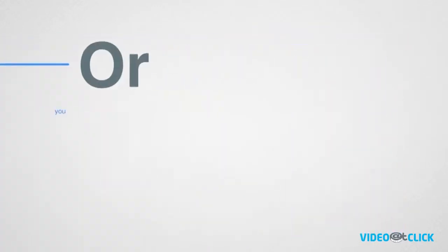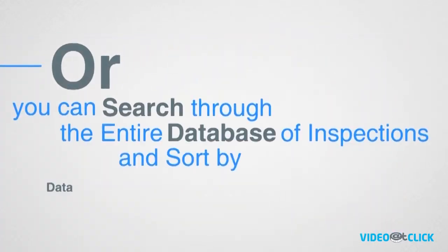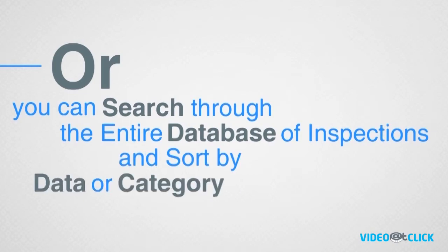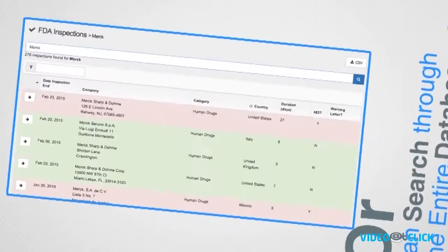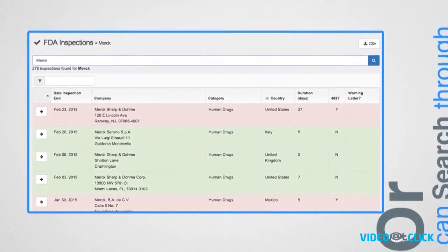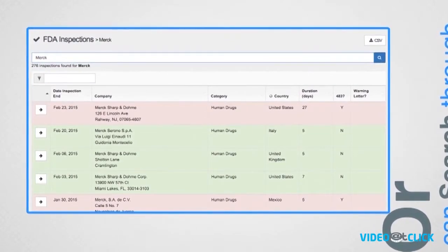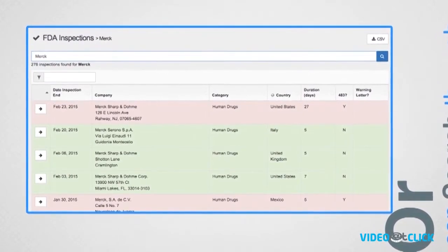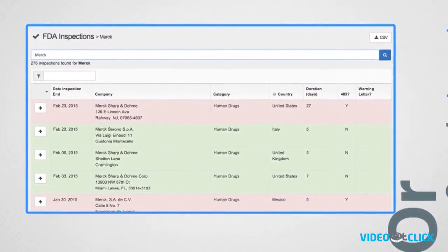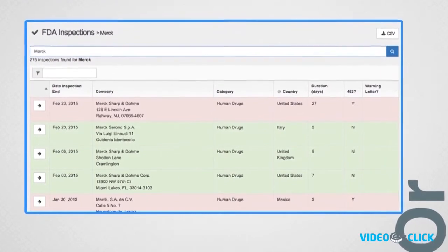Or you can search through the entire database of inspections and sort by date, category, or country — type in Merck, India, or Los Angeles — getting instant insight into any related locations, inspections, and incidents.